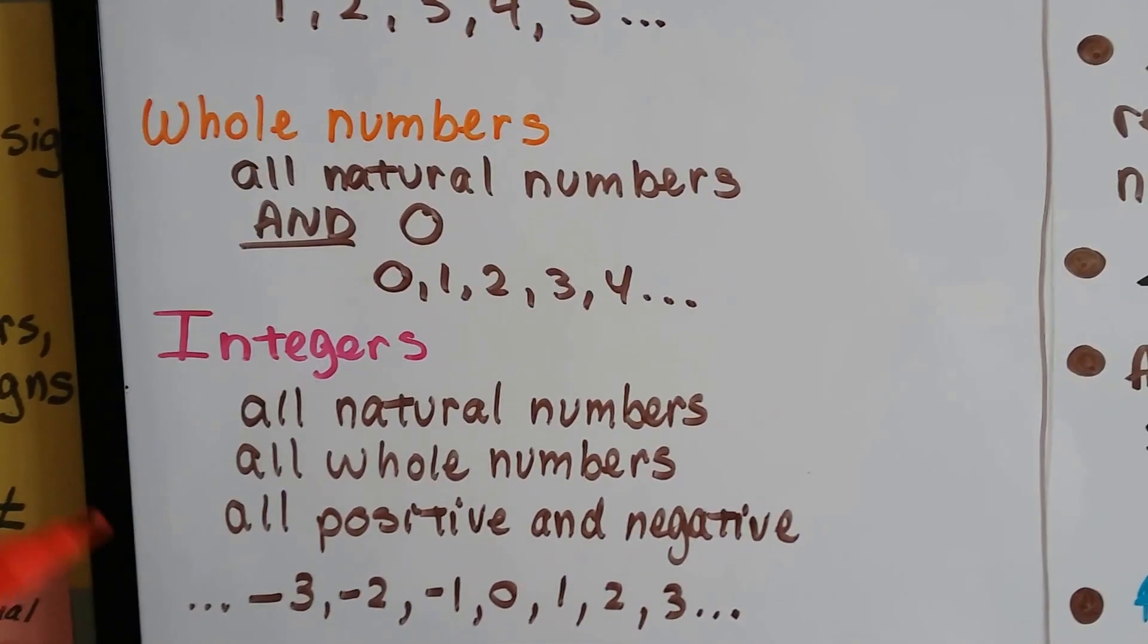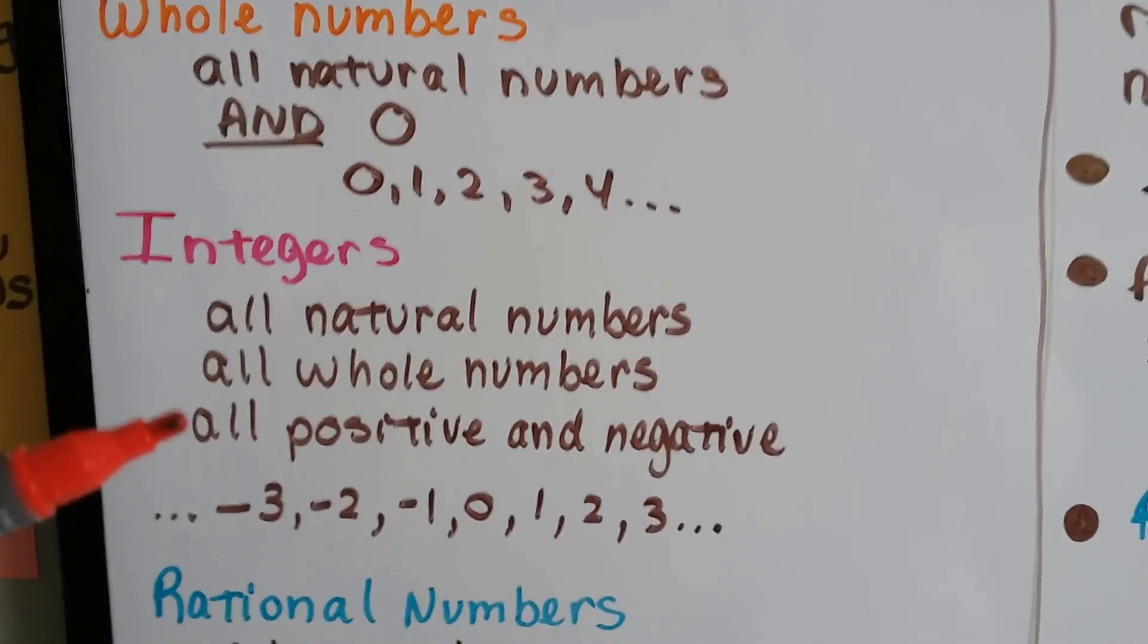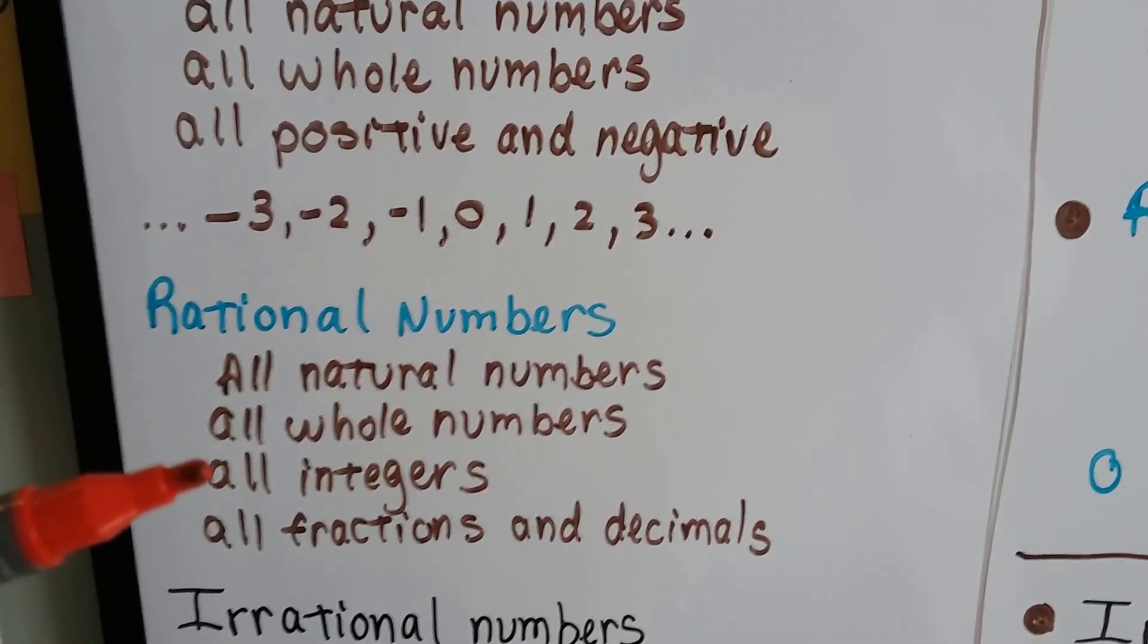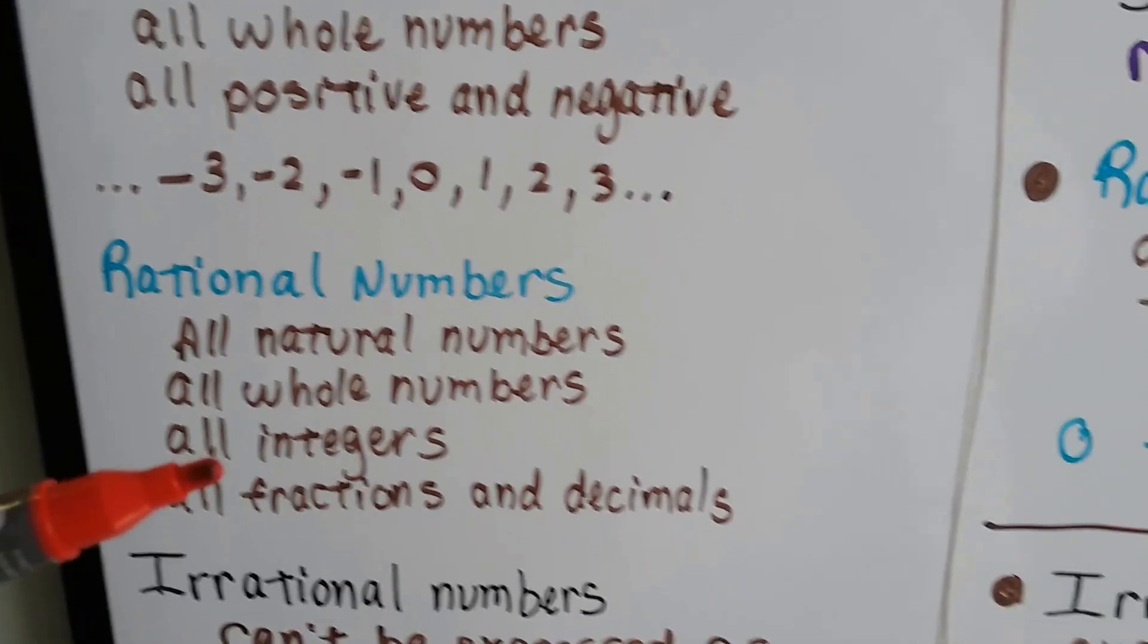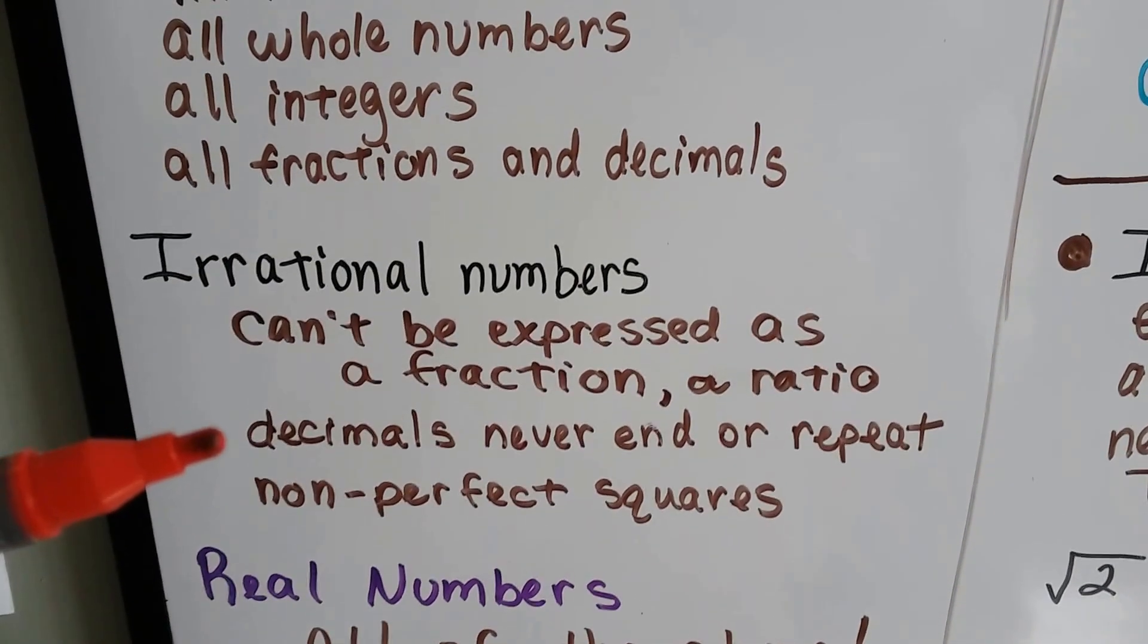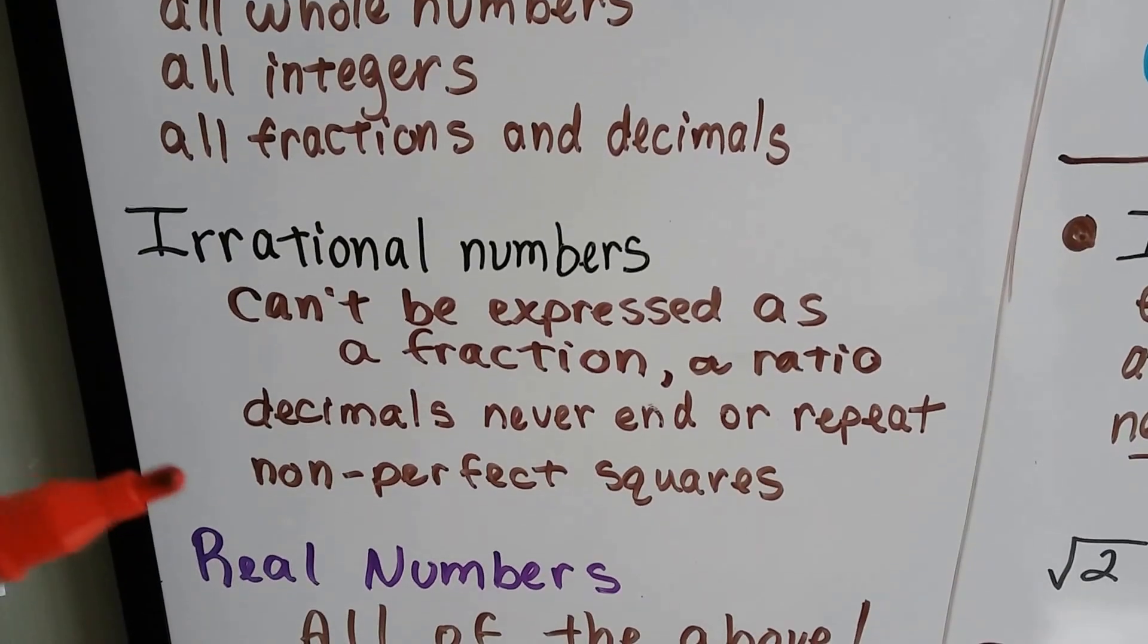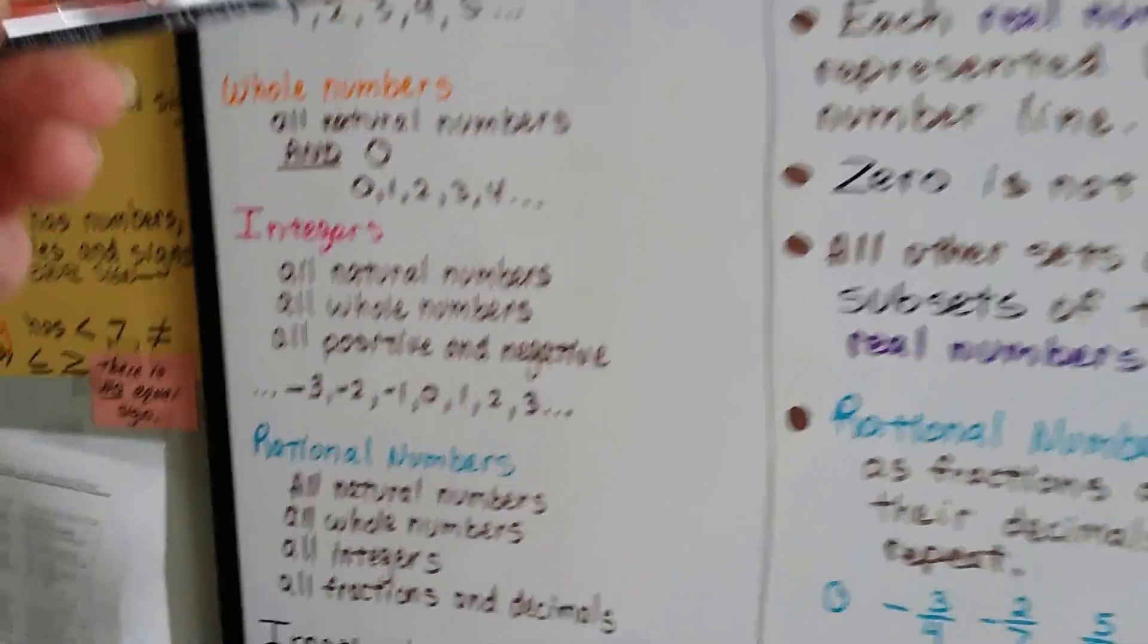Integers are all the natural numbers and whole numbers, and they add positive and negative numbers. Rational numbers are natural, whole numbers, and integers, and now we add fractions and decimals. And real numbers? All of the above.